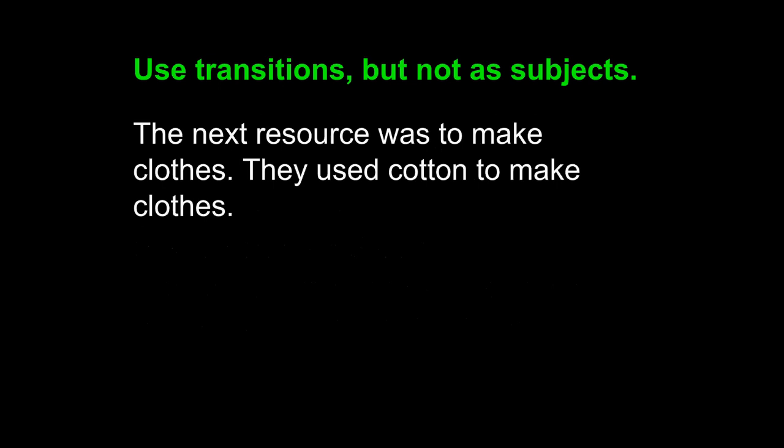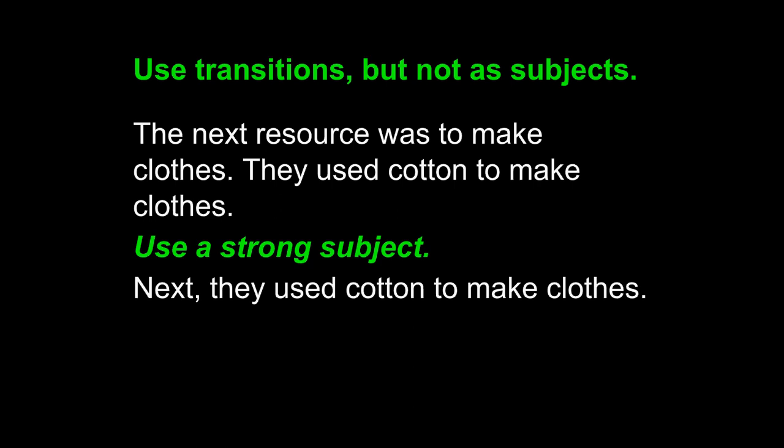Let's do it again. The student wrote: "The next resource was to make clothes. They used cotton to make clothes." This student should combine these two sentences into one, using the same principle of transition words and strong subjects. The result: "Next, they used cotton to make clothes." The word "they" may not seem like a strong subject, but it is a pronoun that replaces the phrase "southern colonies." The strength of "southern colonies" transfers to "they," making it a valid strong subject. You can use pronouns as strong subjects as long as they replace nouns or phrases that are strong in themselves.